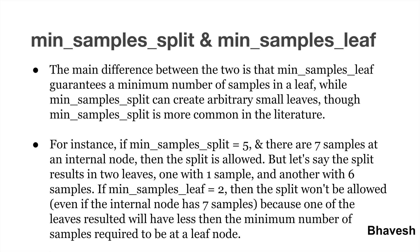Let's look at an example. If you set min_samples_split equal to five and min_samples_leaf equal to two, and you reach a node with seven samples, the split is allowed because min_samples_split is set to five. But if the split produces two leaf nodes — one with just one sample and the other with six — then that split won't be allowed because it violates the condition that min_samples_leaf is set to two. This is how you can avoid overfitting by playing around with different hyperparameter combinations.